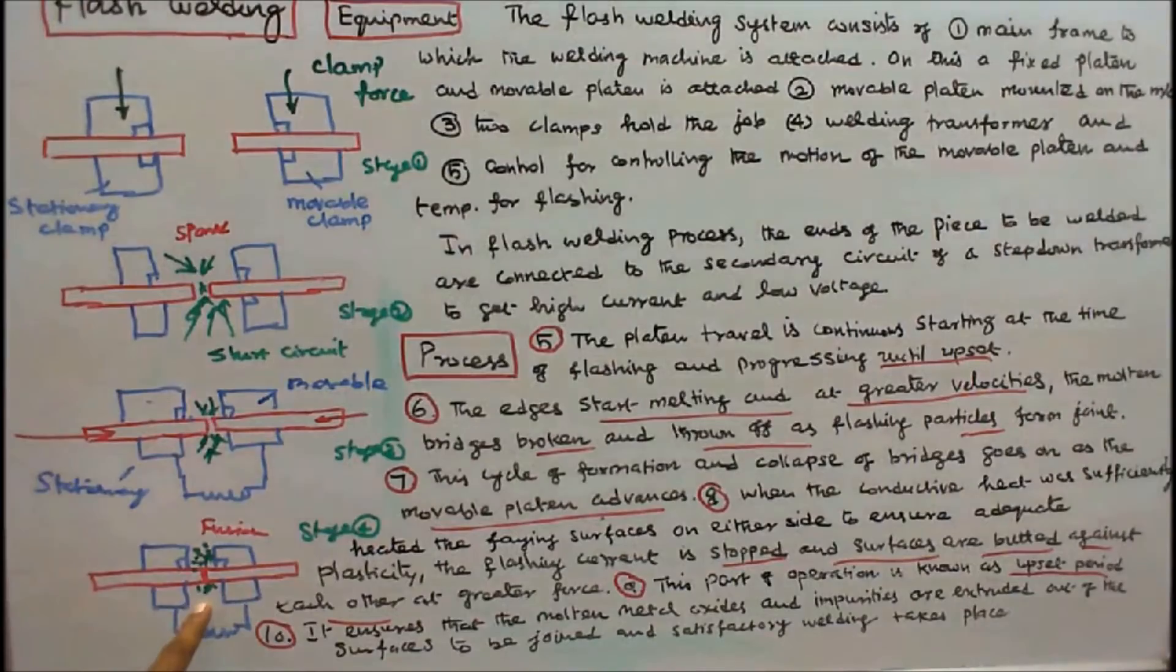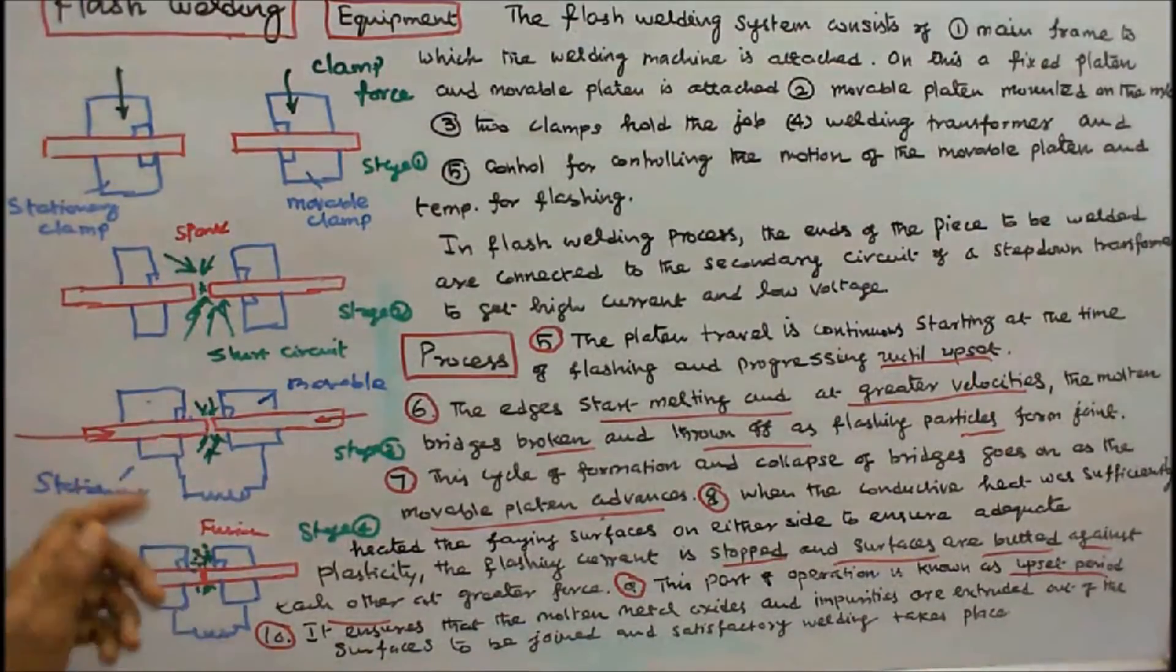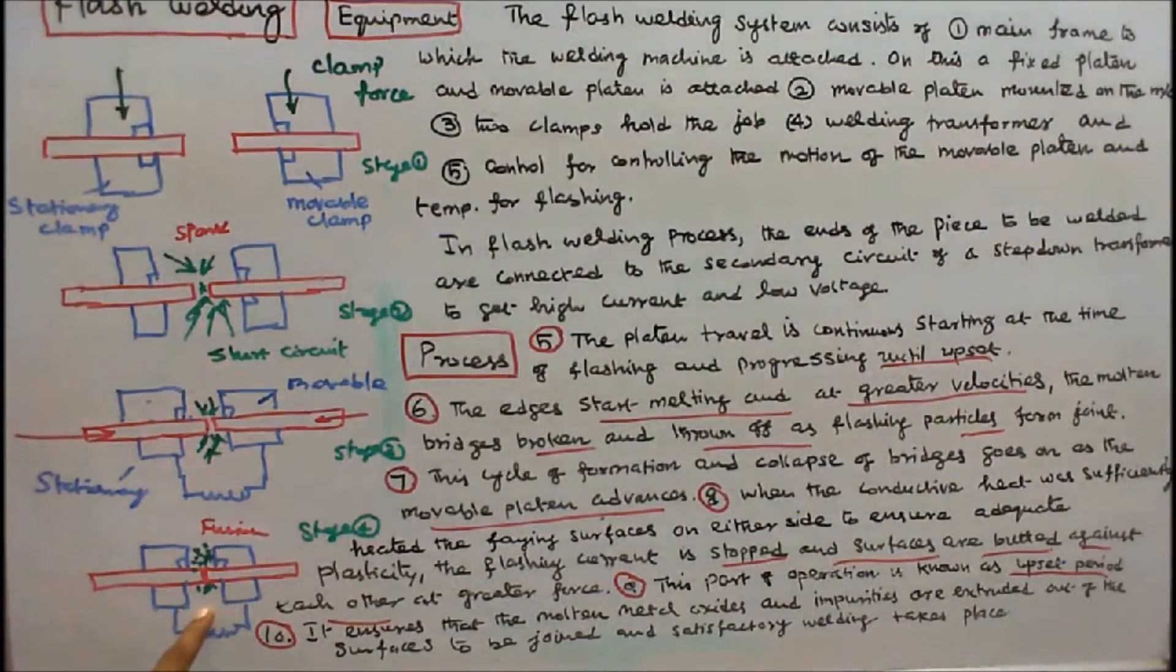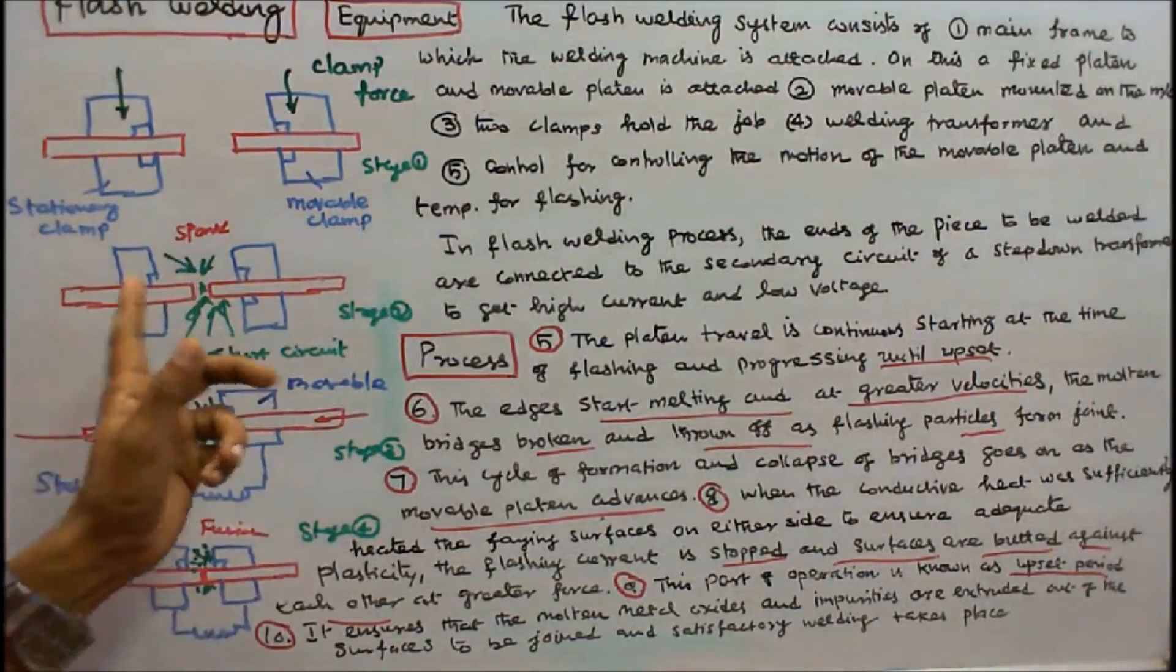7. It ensures that the molten metal oxides and impurities are extruded out of the surfaces to be joined and satisfactory welding takes place. This is the process of flash welding.